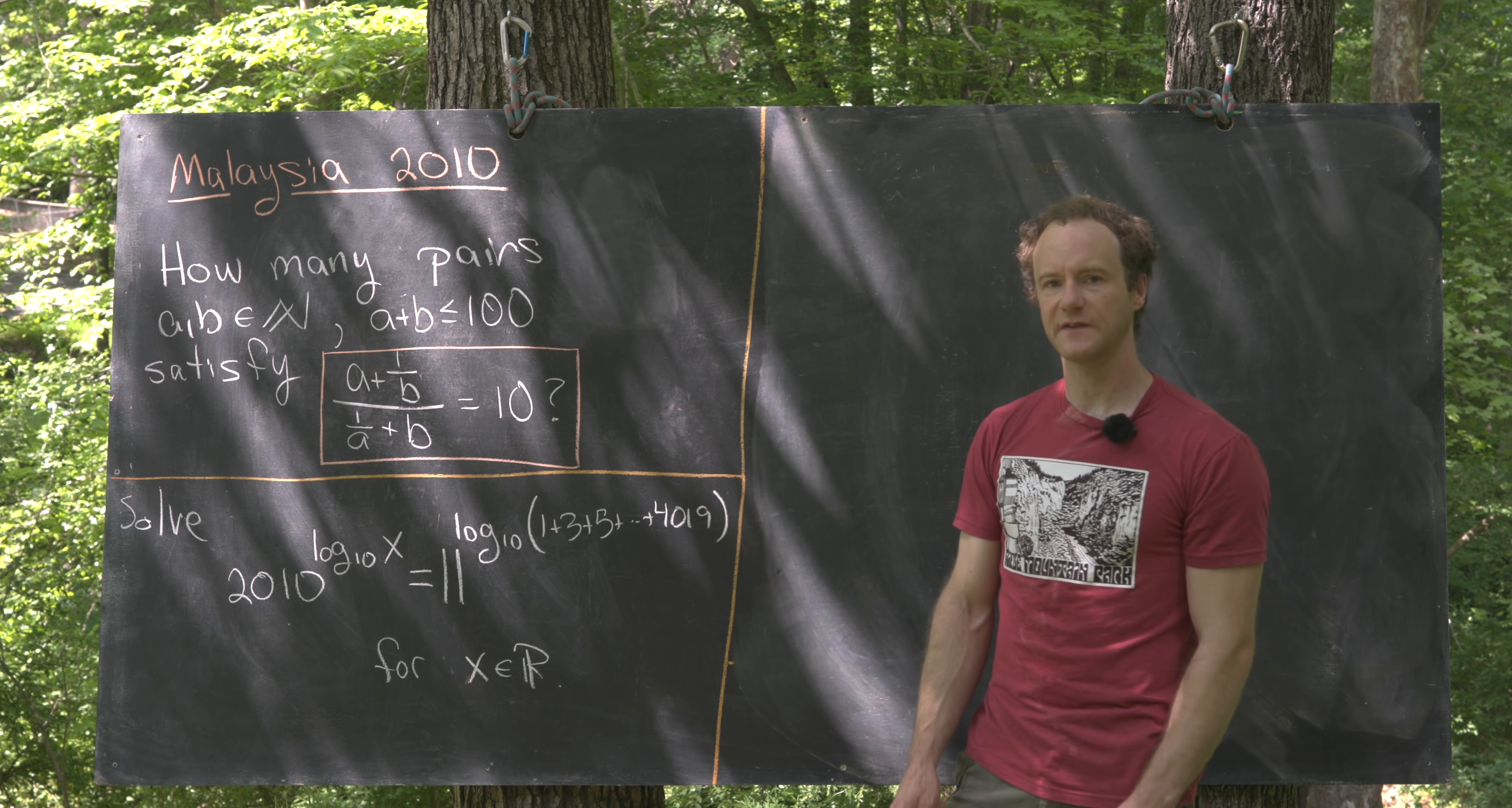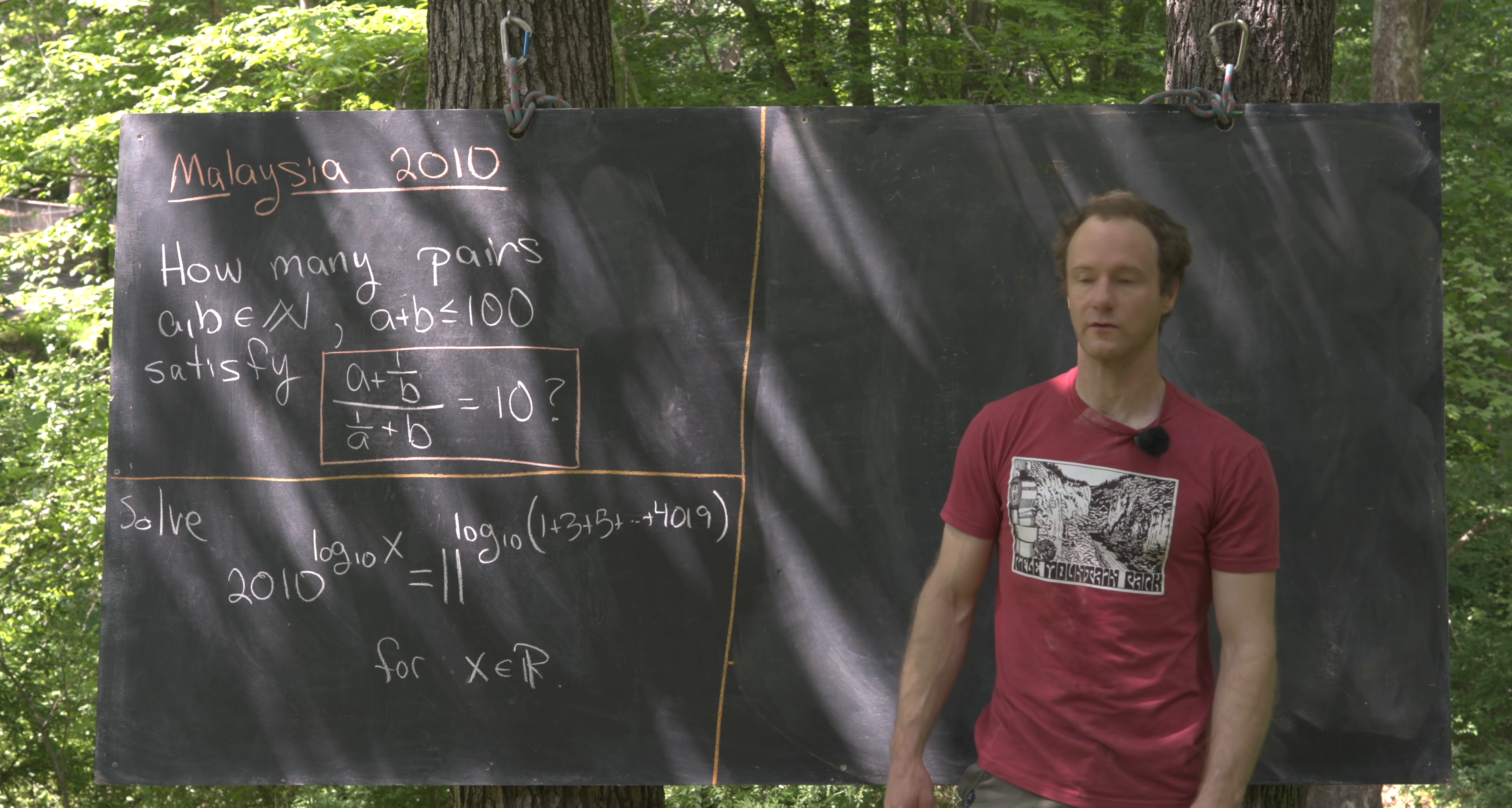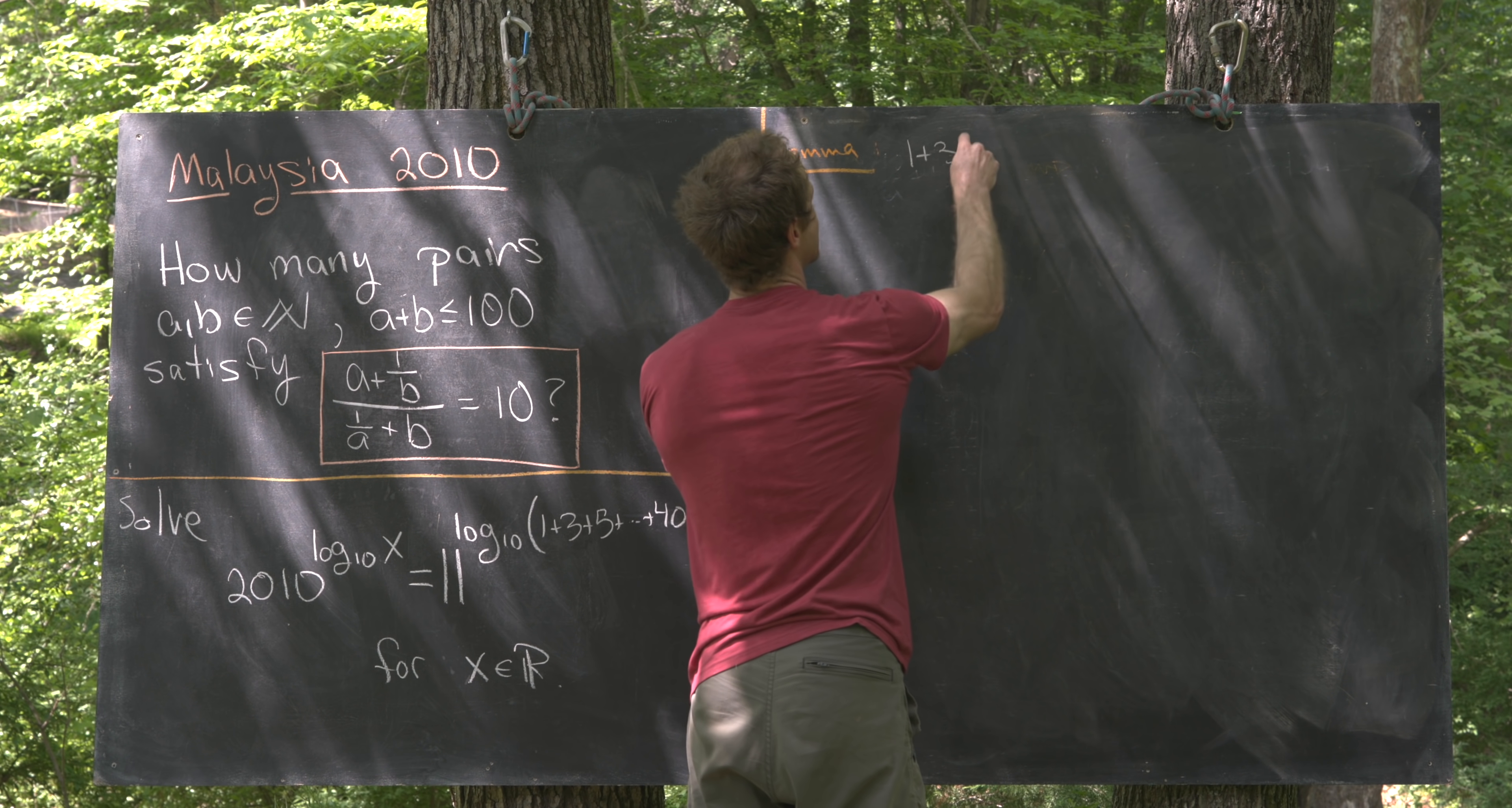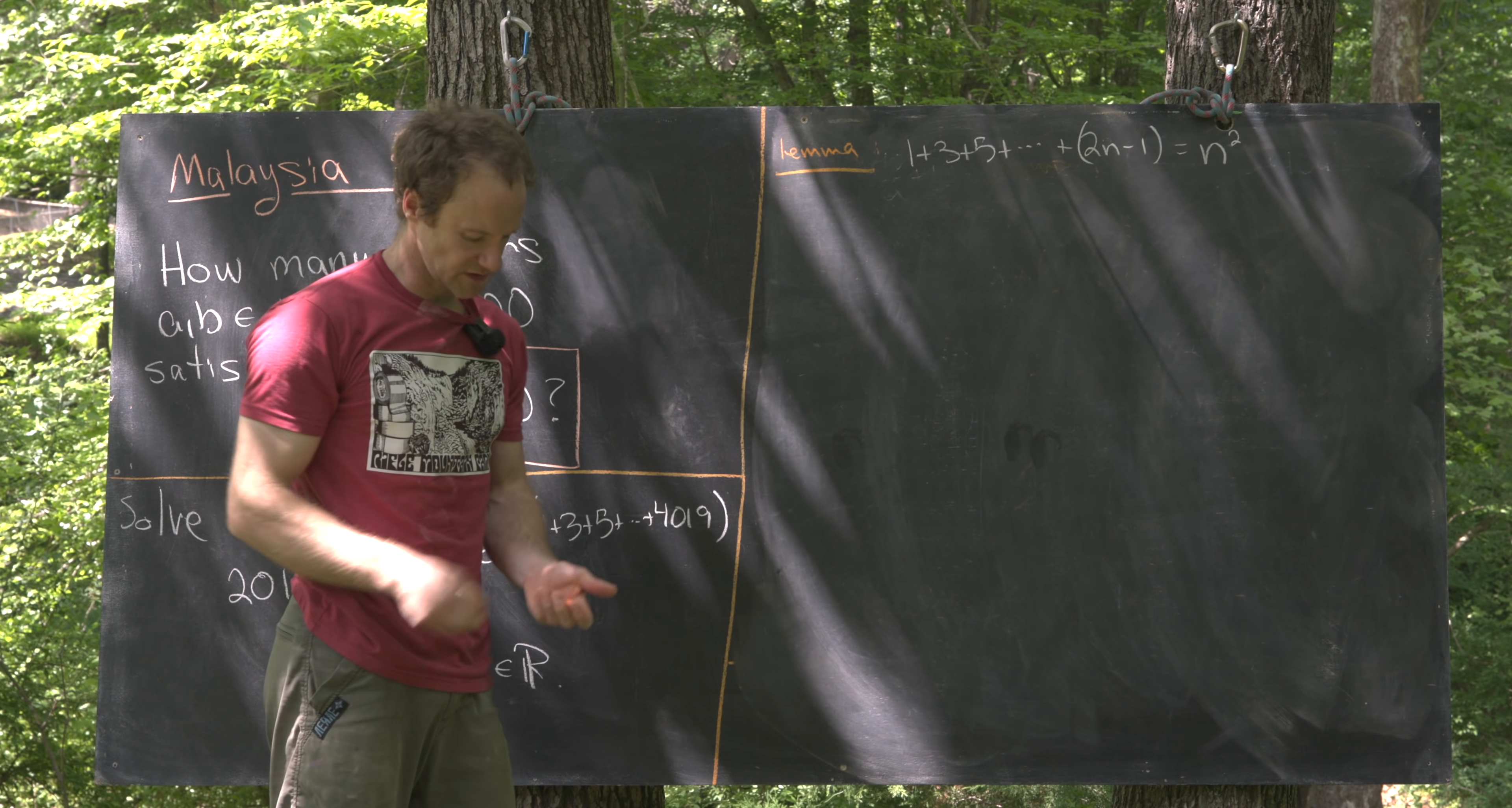So looking at this, there should probably be some simplification of this sum of odd integers. And there is, and I think it's a fairly well-known formula, but we'll wave our hands at a proof really quickly. So I'll maybe write this as a lemma, and that is for all natural numbers n, we have 1 plus 3 plus 5 all the way up to 2n minus 1. So that's going to be the first n odd numbers is equal to n squared.